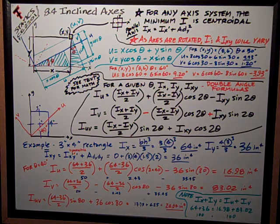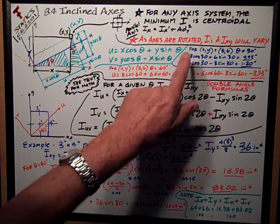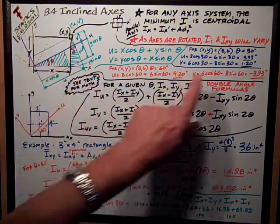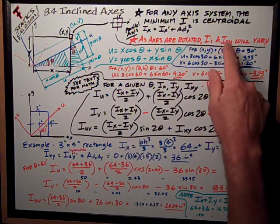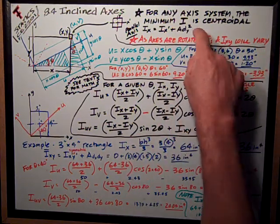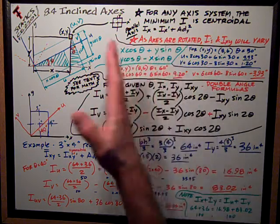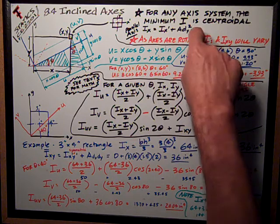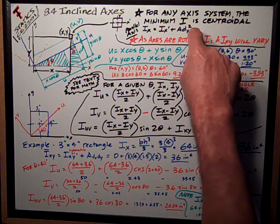Another thing that we need to note is that as the axes are rotated, if we keep the origin at the same point and just rotate them, the moment of inertias and the product of inertia will vary because the centroidal moment about a rotated axis system will vary, and the ad squared terms will vary.